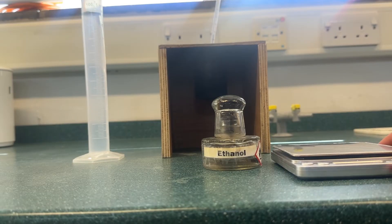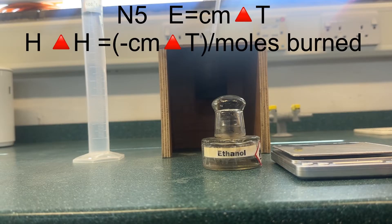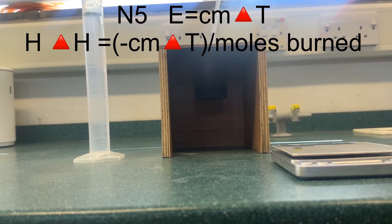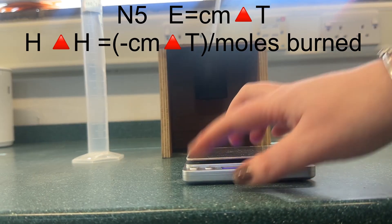To calculate the energy released when burning fuels you will be using the E equals negative CM delta T equation. If you're at higher, you'll be using this per mole.